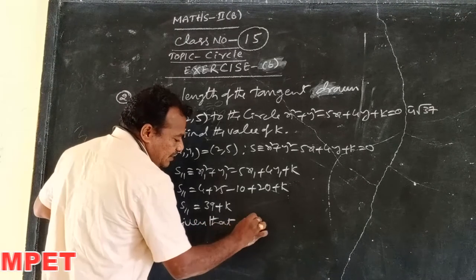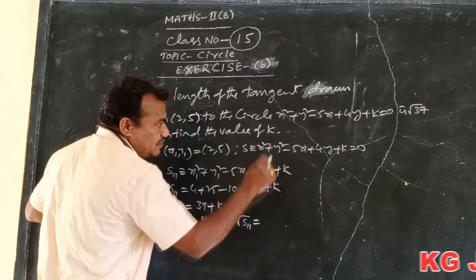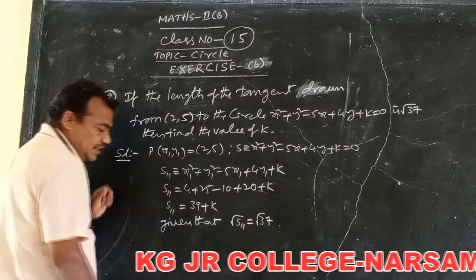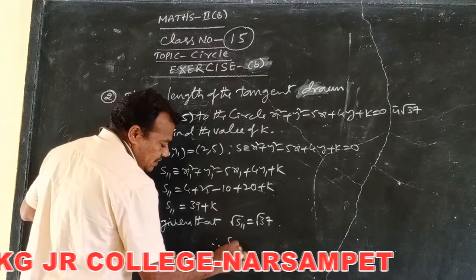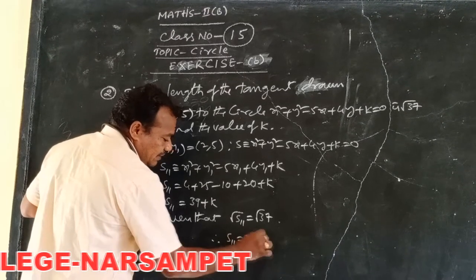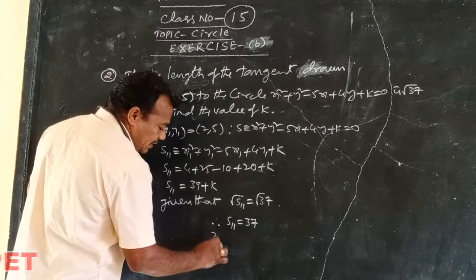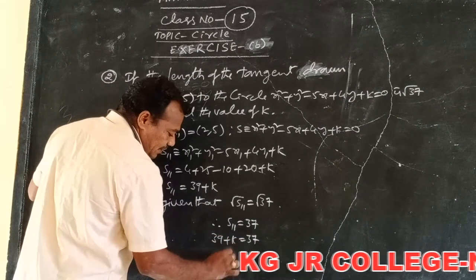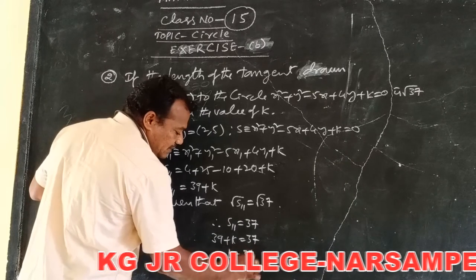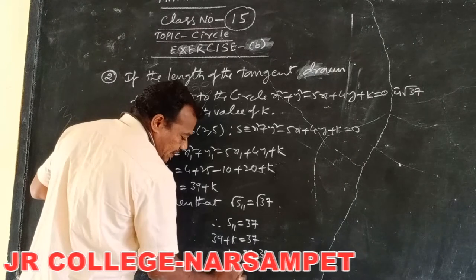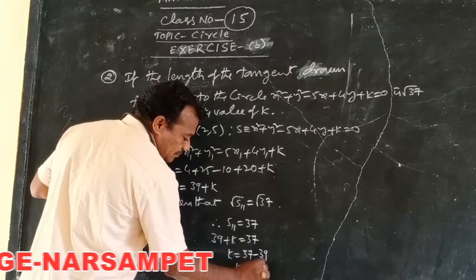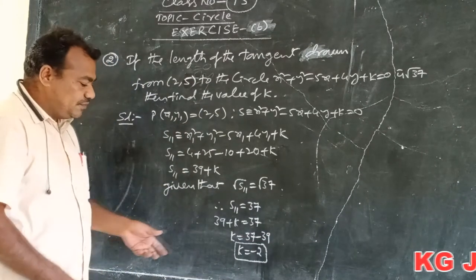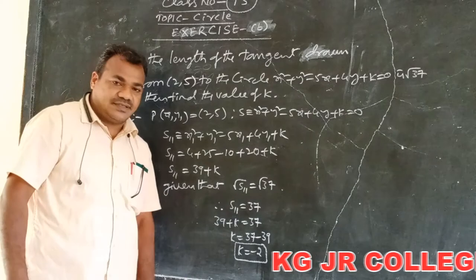The length of the tangent is root S₁₁ = root 37. Squaring both sides: S₁₁ = 37. We know S₁₁ = 39 + k, so 39 + k = 37, which gives k = 37 - 39 = -2. This is the value of k. k = -2.